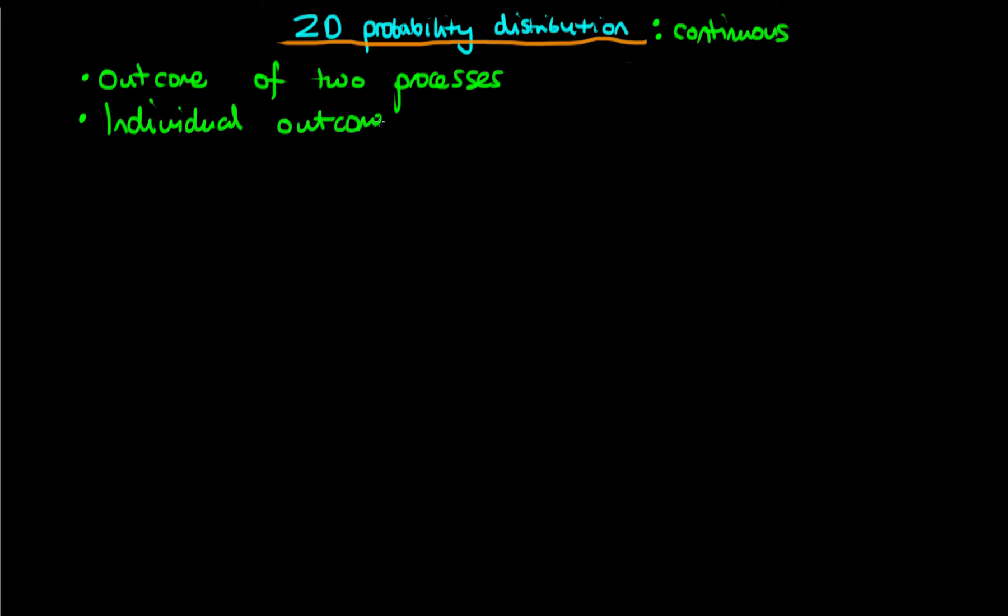Unlike the discrete case, the individual outcome of one of these processes belongs to one of a continuum of possible outcomes. Because the thing which we're describing can be measured as being continuous, the distributions that we use to describe it are continuous probability distributions.